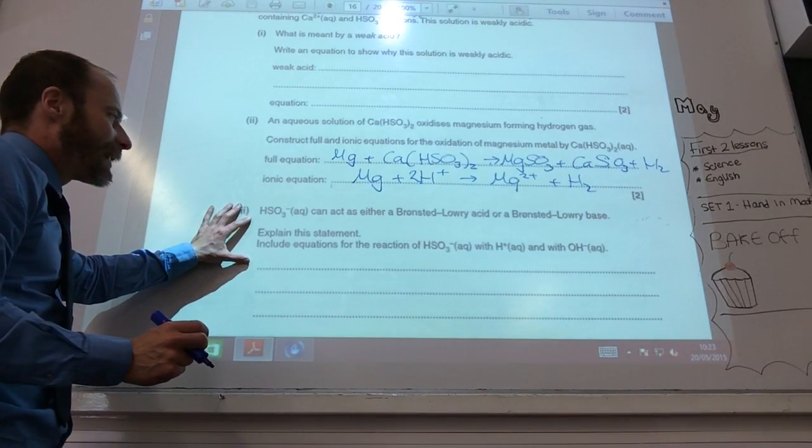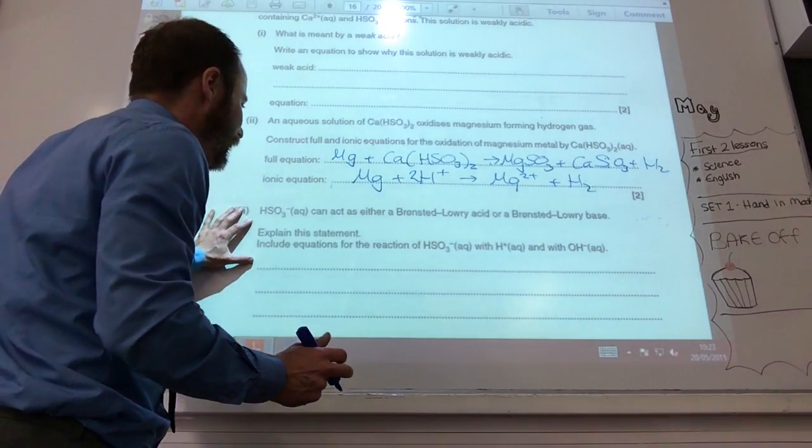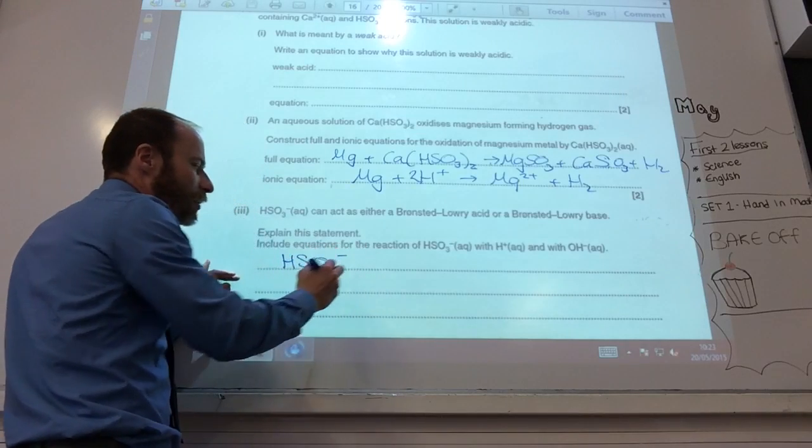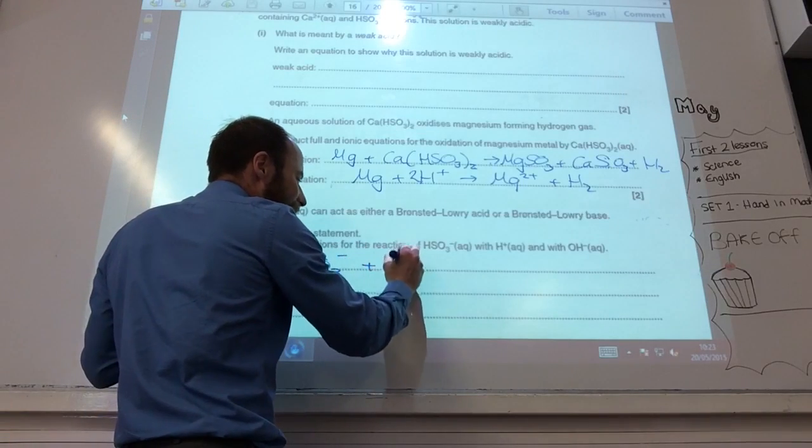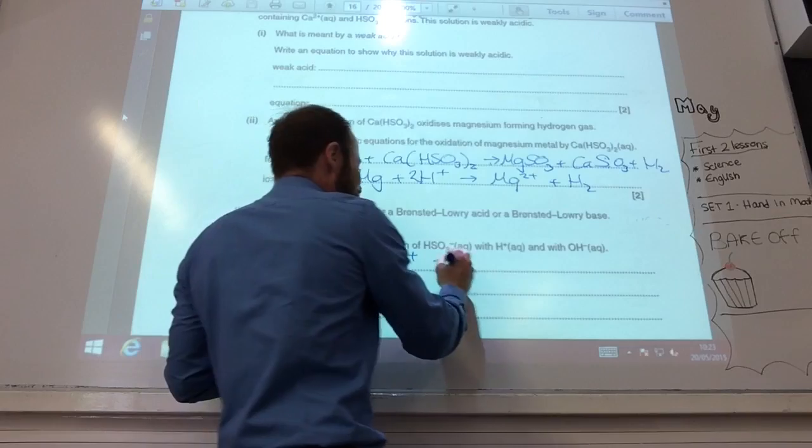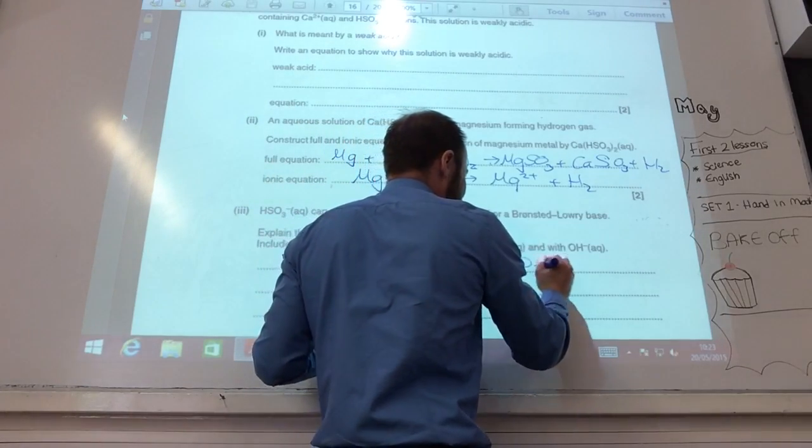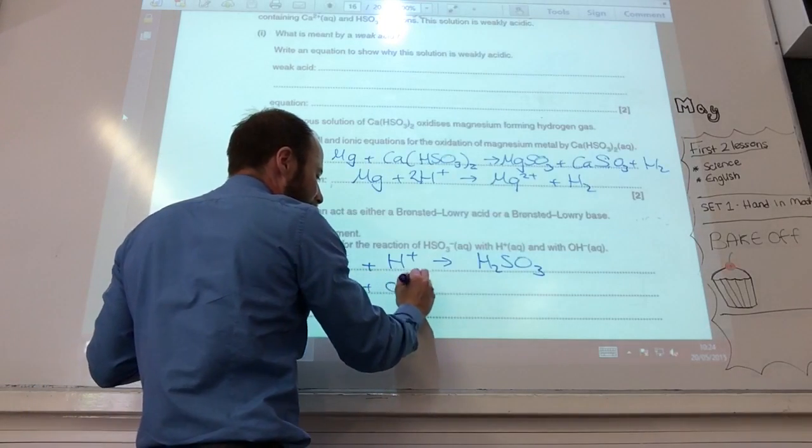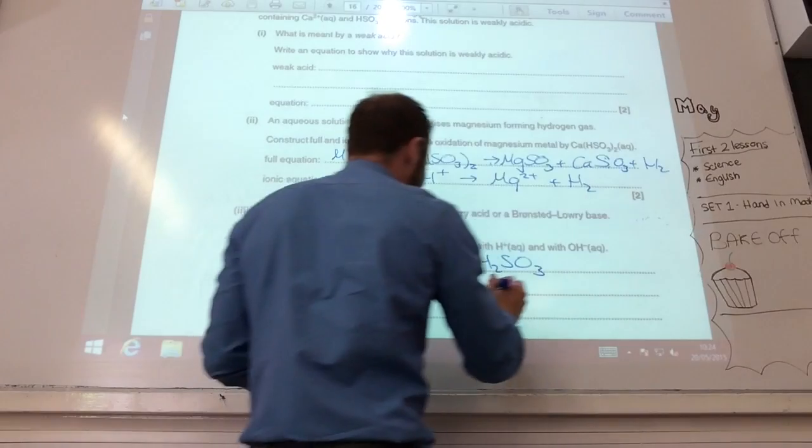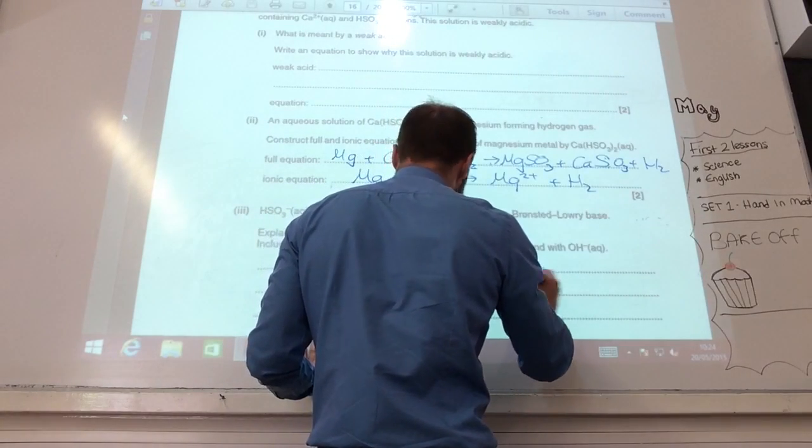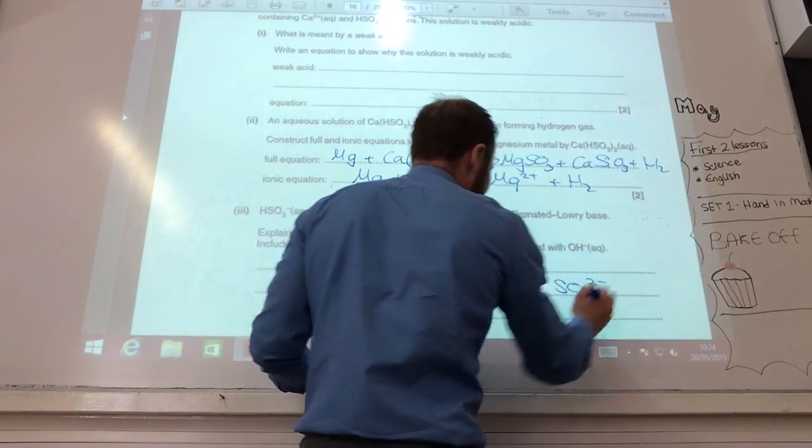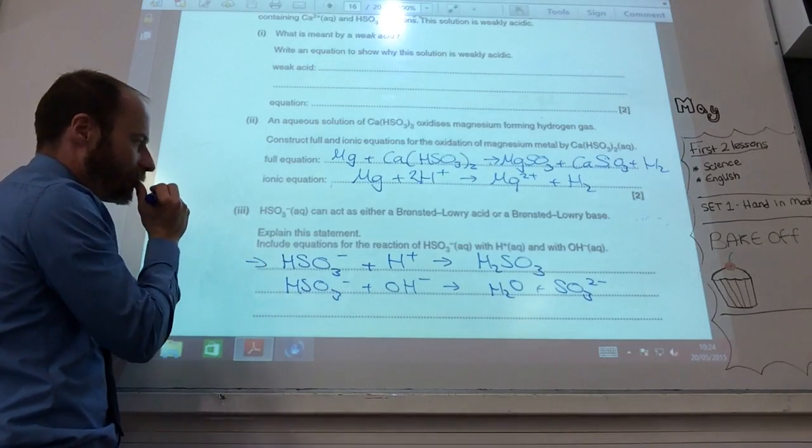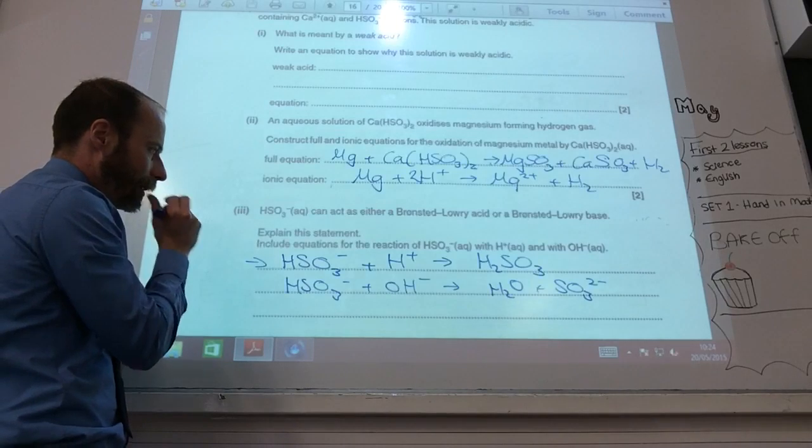Why HSO3- can act as an acid or a base? Explain this statement. So, the first one, I mean, okay, there are different equations for this. This reacting as a base means it's accepting an H+ to give you H2SO3. So, if we're acting as an acid, will it be donating H+ to hydroxide to give you water plus SO3 2-?